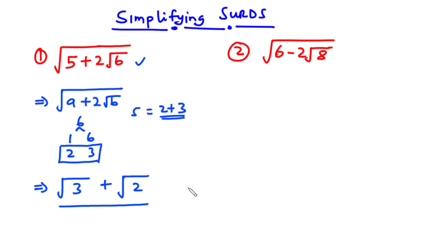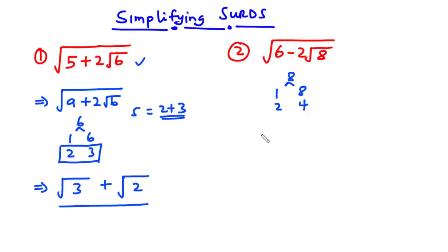Now let's solve the second question: the square root of 6 minus 2 root 8. To solve this, we need to find factors of 8 that add up to 6. The factors of 8 are 1 and 8, and also 2 and 4. Now 2 plus 4 is 6 and 2 times 4 is 8. So we are going to use the pair 2 and 4.